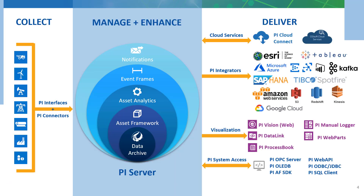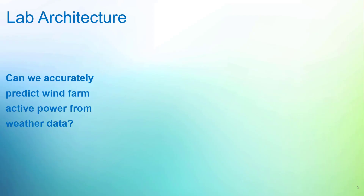This slide shows the PI system components we will use in this course, which will be the PI Data Archive, PI Asset Framework, and OCS. The goal of this course is: can we accurately predict wind farm active power from weather data? This capability is essential for every wind operator, as having a reliable forecast helps them manage their portfolio of power generation resources in order to meet the forecasted demand.